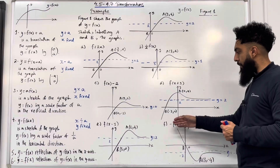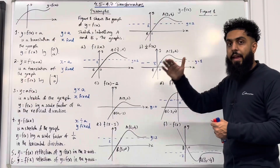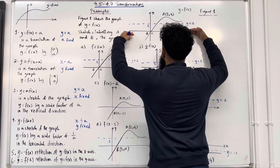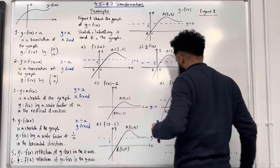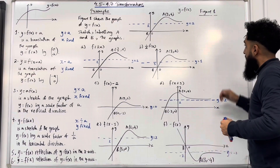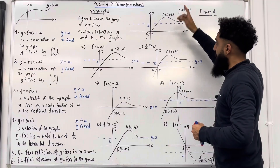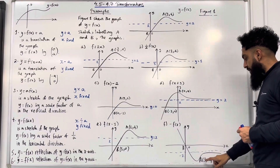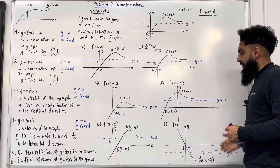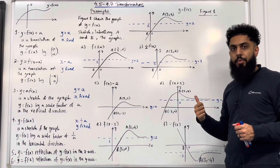Part f: minus f of x. This represents a reflection of f of x in the x-axis. So if I put a mirror on the x-axis, I generate the reflected image. The asymptote gets reflected to y equal −2. The coordinate a gets reflected to (3, −4). The coordinate b remains fixed at the origin. That completes part f and this particular example.